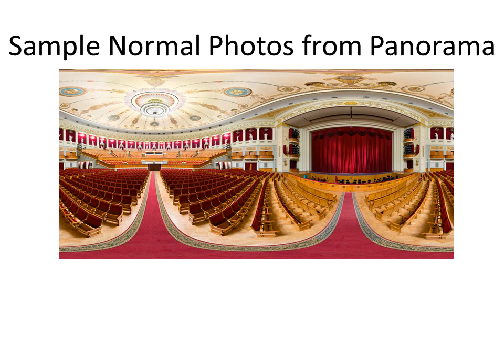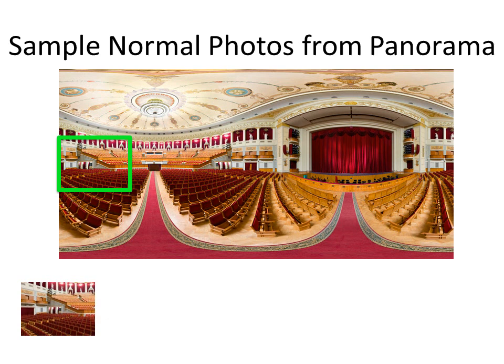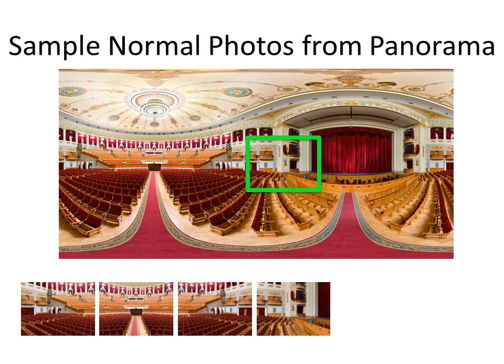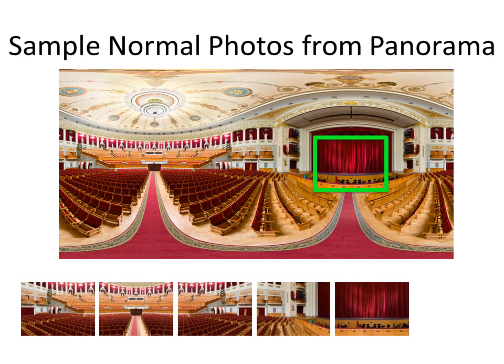For training, we generate standard camera images from each spherical panorama. Images are generated from the equirectangular projection using a simple geometric transformation. We sample views at equal intervals around the horizontal. This allows us to sample all viewpoints in an unbiased manner and obtain an equal number of training images from each viewpoint. In addition, we know the ground-truth viewpoint relations among the training views, which is a useful constraint to include in the training.